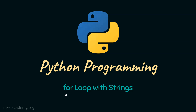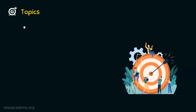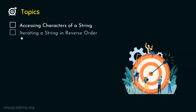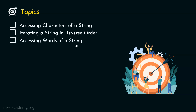In this presentation, we will understand how for loop works with strings. The first topic is accessing characters of a string using for loop. The second topic is iterating a string in reverse order using for loop. And the third topic is accessing words of a string using for loop.